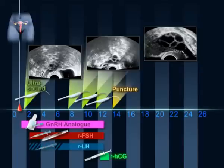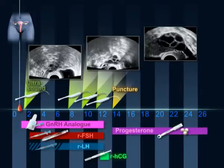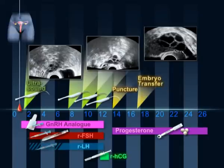Following the procedure, daily administration of the hormone progesterone is given vaginally. Two to five days after oocyte recovery, the embryos are transferred. Two weeks later, a pregnancy test is performed.